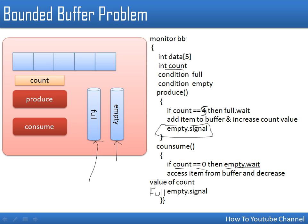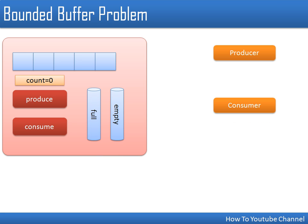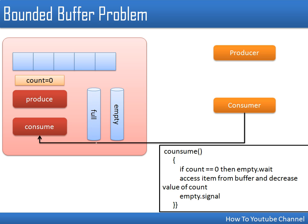Now let's see the solution with an example. Initially the buffer count is zero and both conditional variable queues are empty. First, a consumer process calls the consume operation. The definition says if count equals zero — which it is — then call empty.wait. So this process is now waiting inside the empty queue. When wait is called, the process releases the monitor lock and is put inside the queue and starts sleeping. The monitor is now free for other processes.